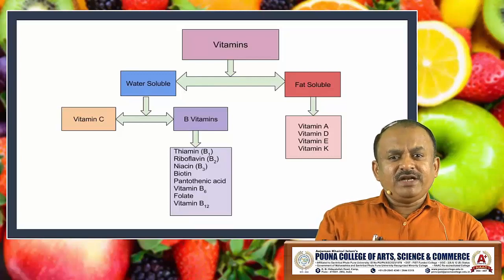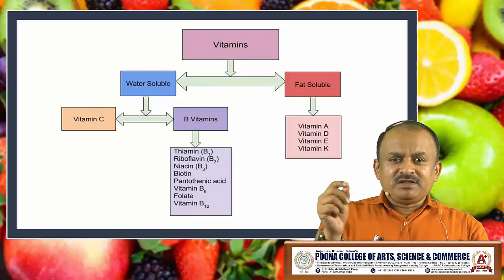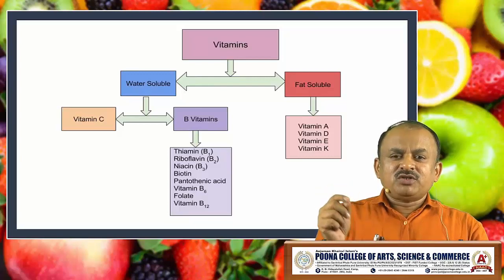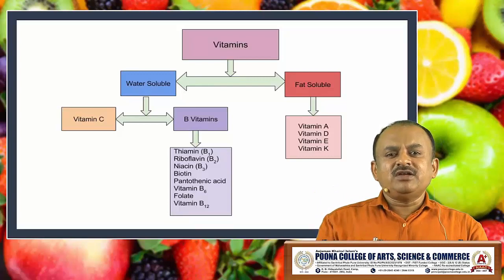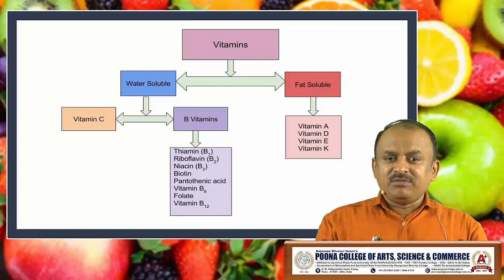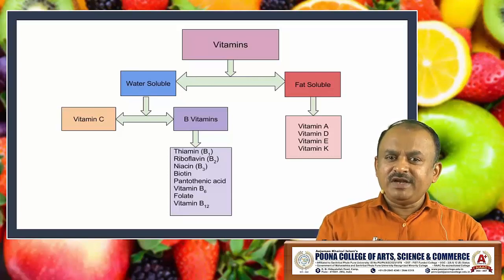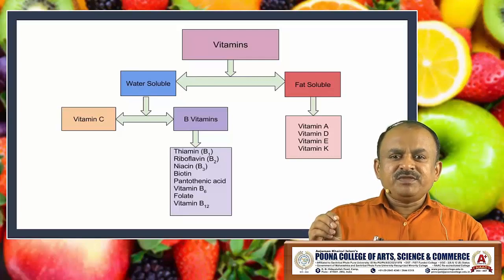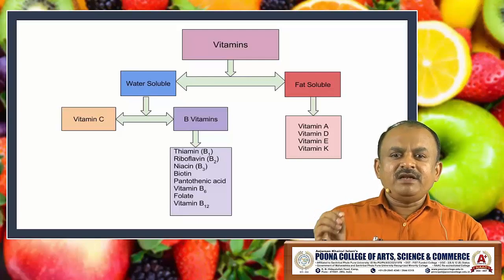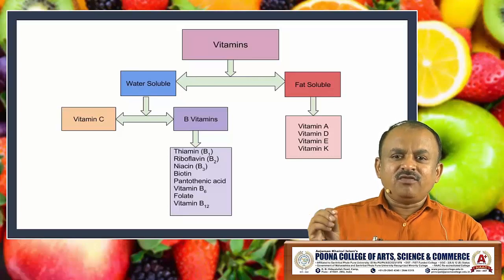The vitamins included in the vitamin B series are: thiamine, also called vitamin B1; riboflavin, also called B2; niacin, also called B3; then biotin; pantothenic acid; vitamin B6; folate; and vitamin B12. Their functions and deficiency disorders we will discuss later on.